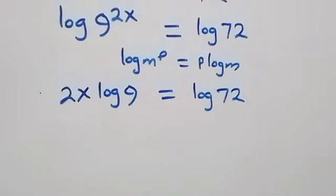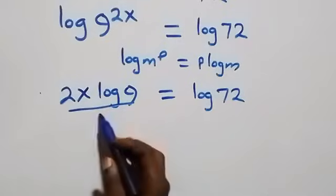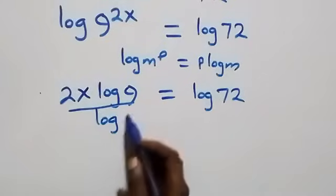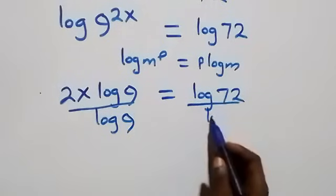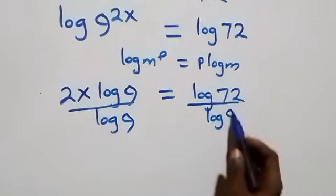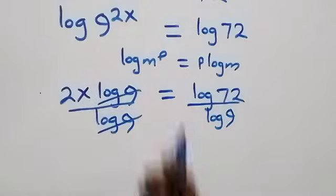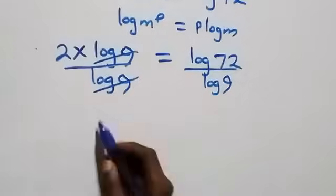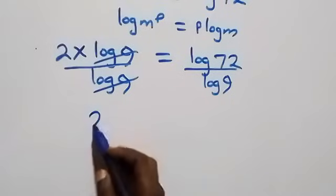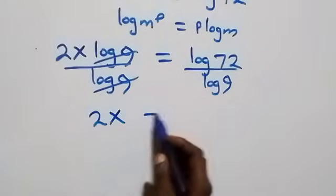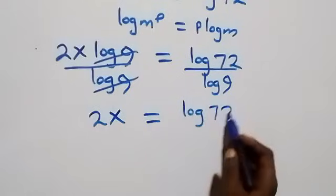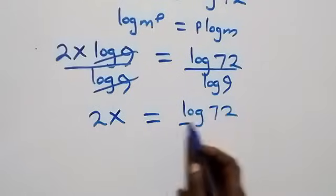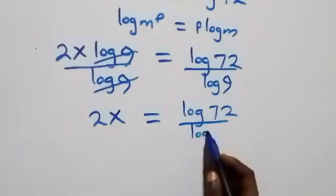The next step is to divide both sides by log 9. We divide the left side by log 9 and also divide the right side by log 9. The log 9 on the left cancels, and we are left with 2x equals log 72 over log 9.